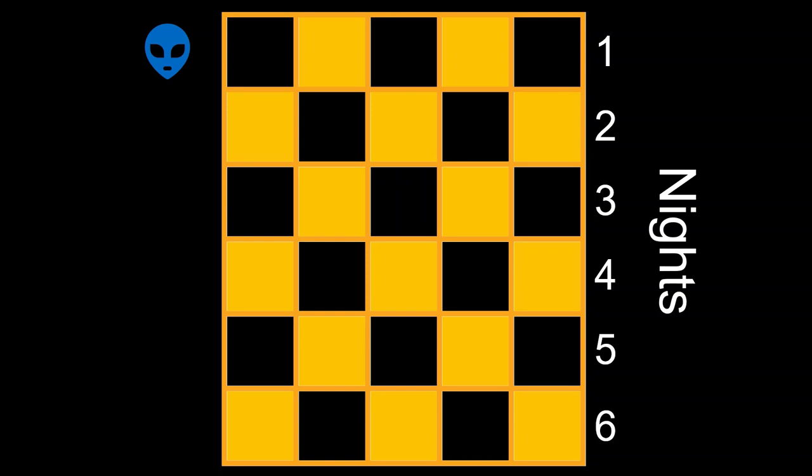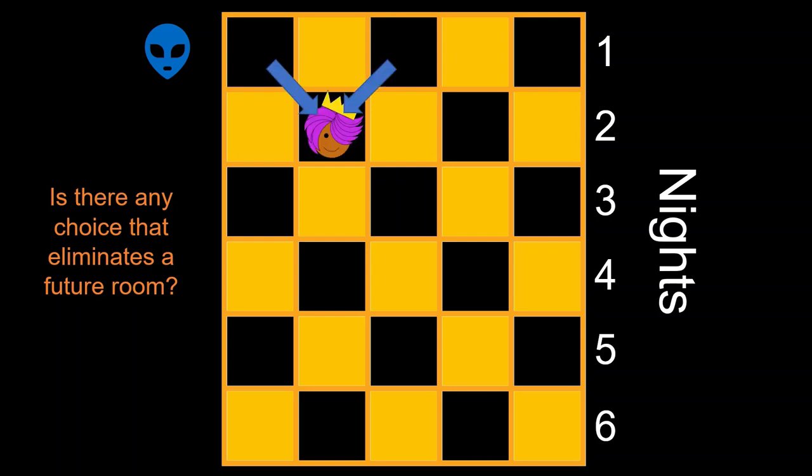So now that we are aware of all these patterns, we can finally think about what the prince can do. The critical question to ask is, is there any choice that eliminates a future room? Applying the fact that the princess can only move diagonally, we see that for the three rooms in the middle, the princess has two ways of moving there from the previous night.